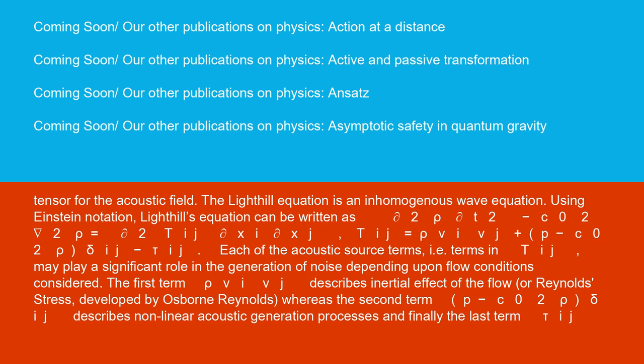Each of the acoustic source terms, i.e. terms in Tᵢⱼ, may play a significant role in the generation of noise depending upon flow conditions considered. The first term, ρvᵢvⱼ, describes inertial effect of the flow, or Reynolds Stress, developed by Osborne Reynolds.